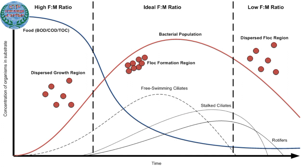For the activated sludge process to operate properly, there must be a balance between the food entering the bioreactor and the microorganisms in the bioreactor. A high FM ratio means there is a greater quantity of food — measured as BOD, COD, or TOC — relative to the quantity of microorganisms available to consume that food.